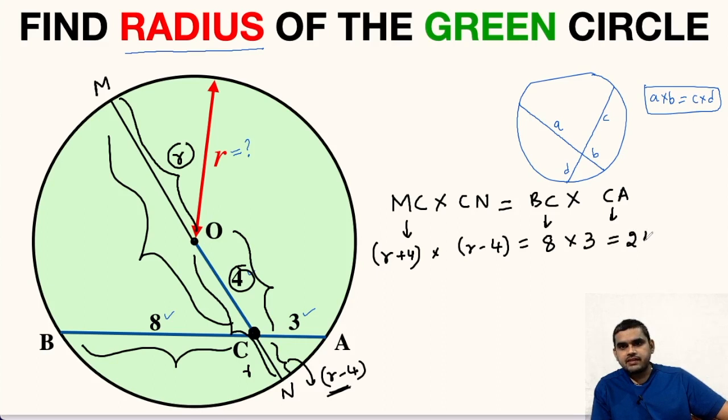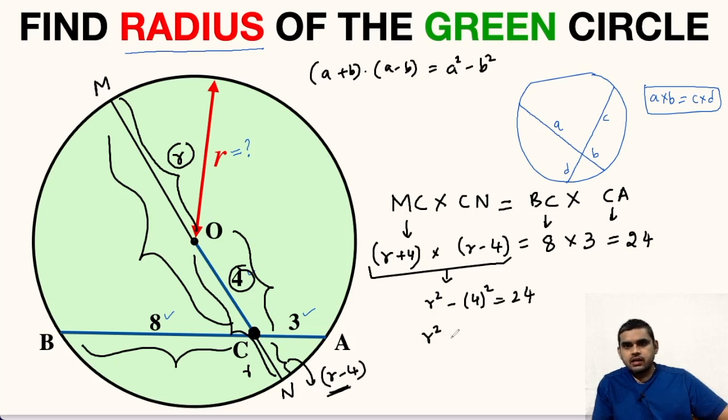Let us use a property here that is A plus B times A minus B is equal to A squared minus B squared. Using this identity we will get R plus 4 multiplied with R minus 4 as R squared minus 4 squared which is equal to 24. R squared minus 16 is equal to 24.